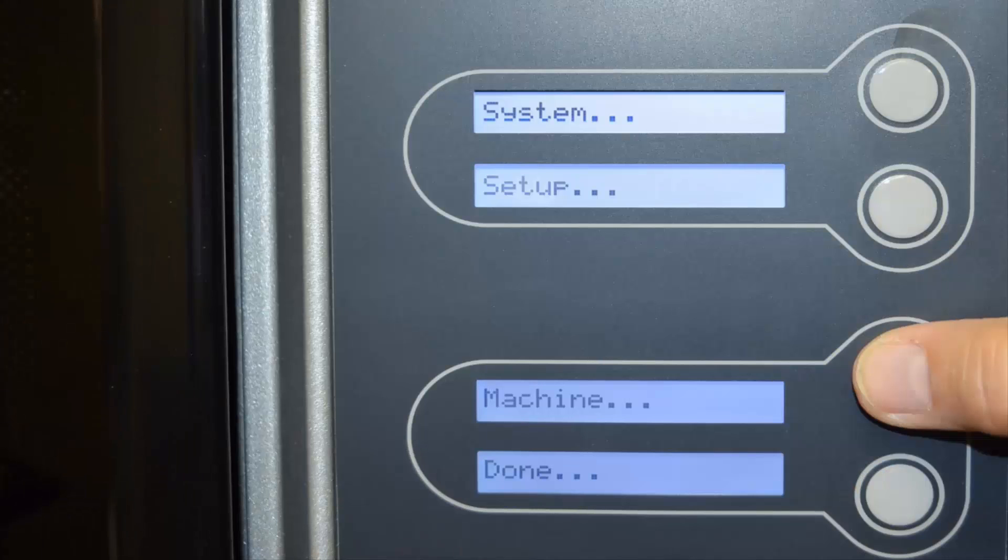From there, in the next panel, you'll see the option to select Machine. After you've selected the Machine option, the printer will start a calibration process and search for home. After that's done, you'll be able to move on to the next step.